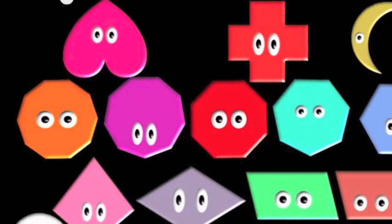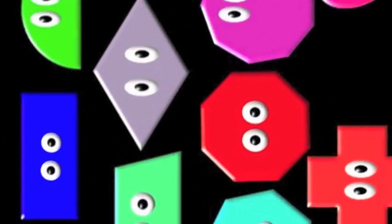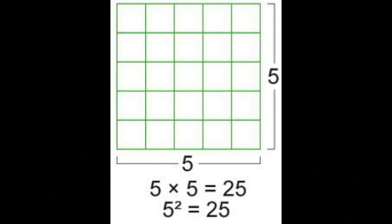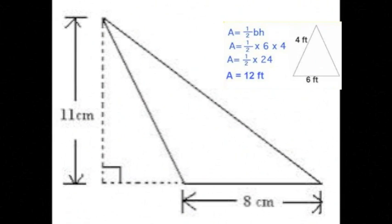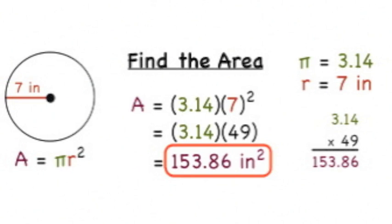Geometry! Let's learn Geometry. The area of a rectangle equals length times width. The area of a square equals the length of its side squared. The area of a triangle equals one half base times height. The area of a circle equals pi times radius squared.